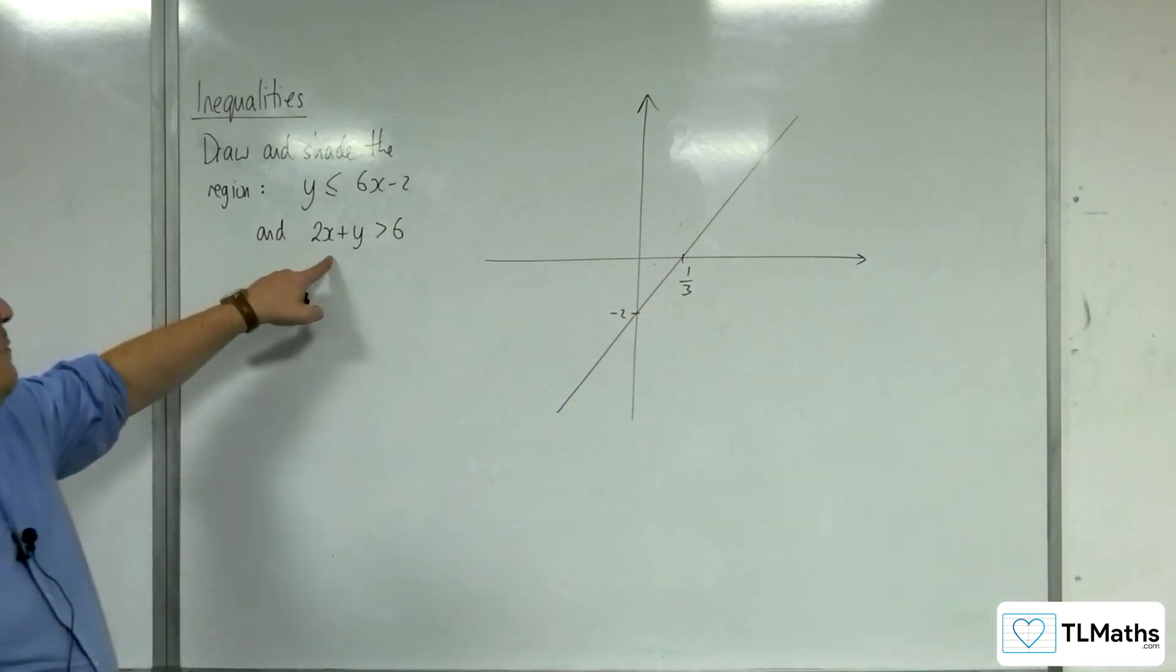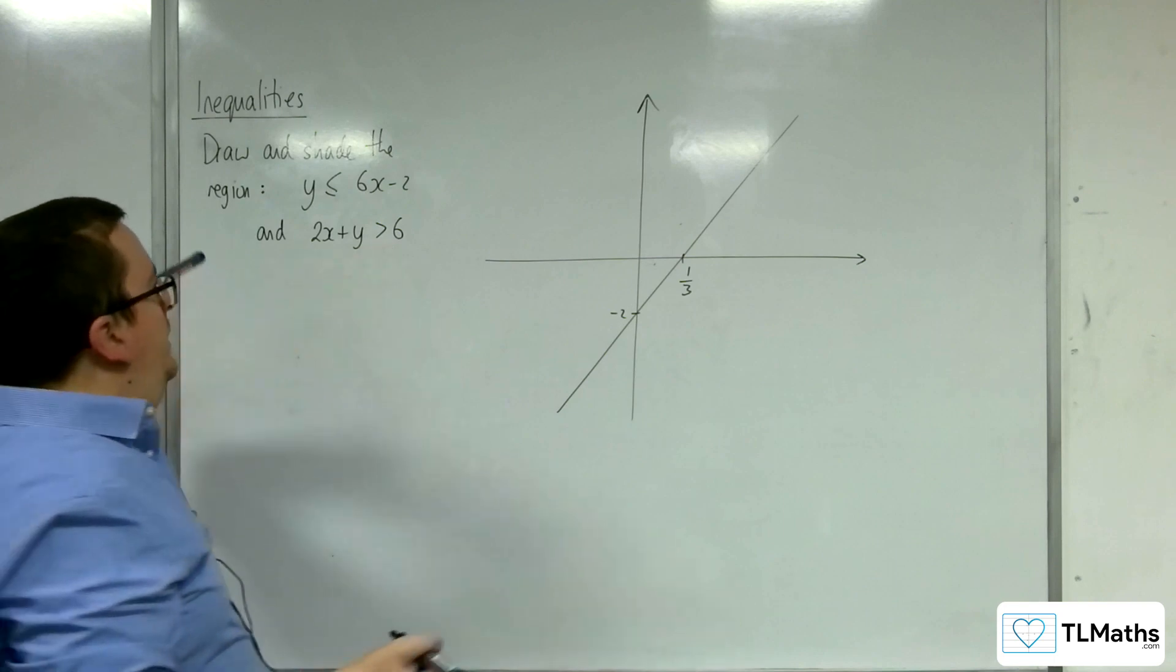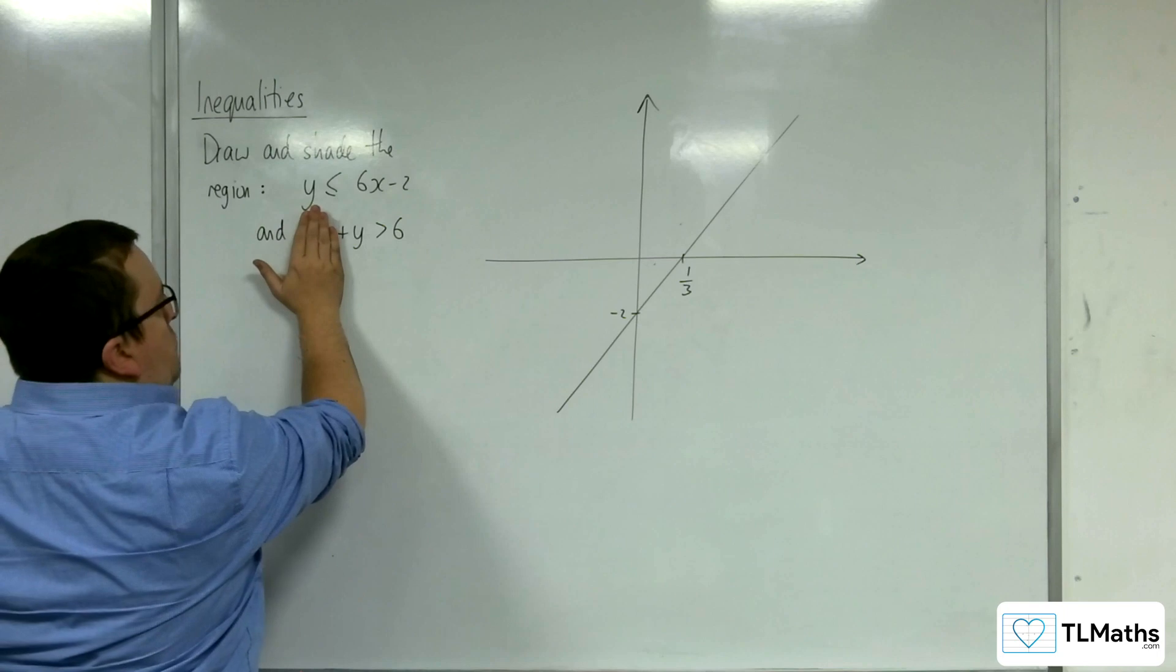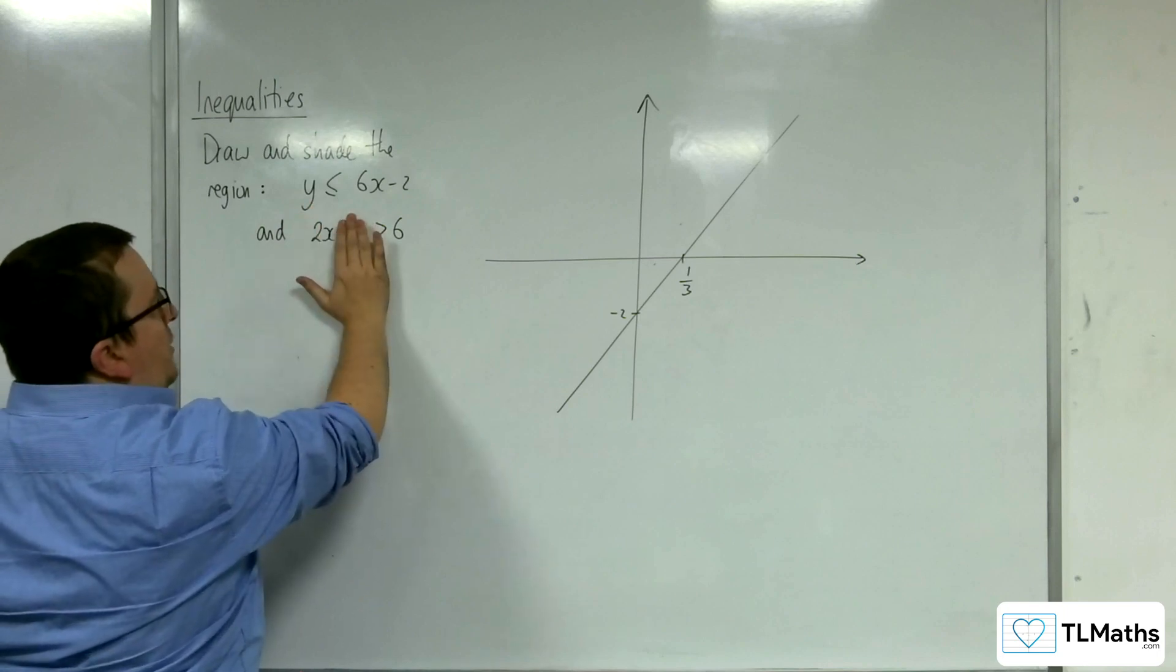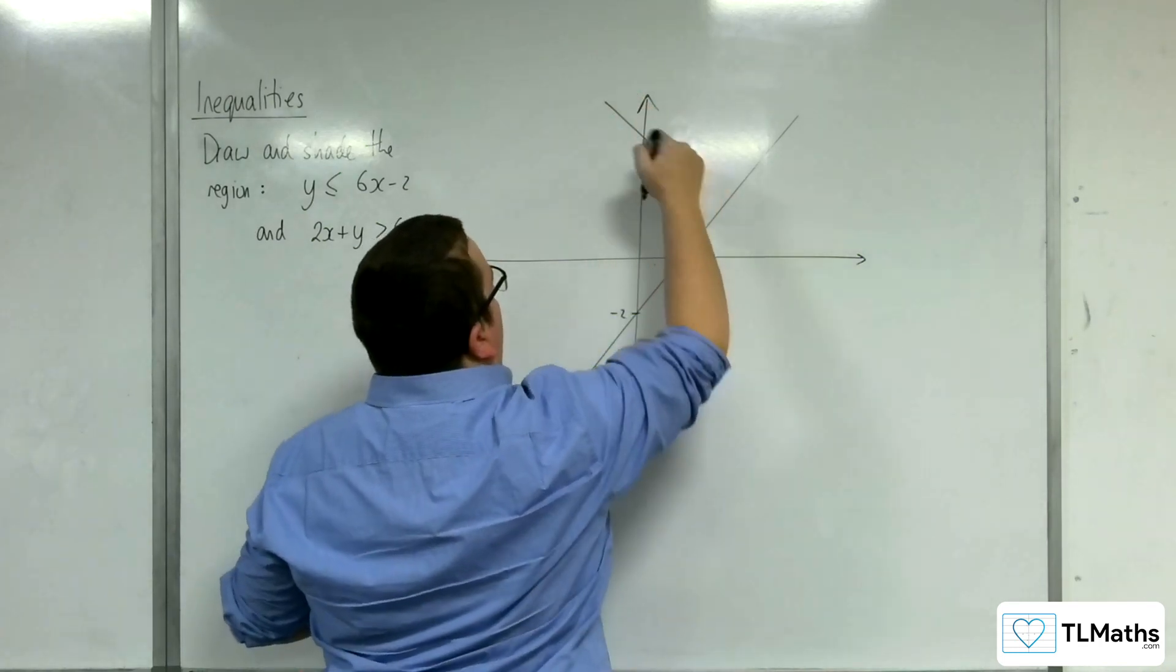Okay, right, then we've got this line here, 2x + y equals 6. So when x is 0, y is 6, and when y is 0, x is 3. So 6 and 3, so something like this.